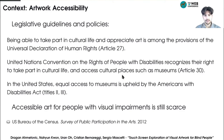The ability to participate in the cultural life and appreciate art is included among the provisions of the Universal Declaration of Human Rights. For people with disabilities, this provision is implemented by the United Nations Convention on the Rights of People with Disabilities, and in the United States by the Americans with Disabilities Act. The legislative framework upholds equal access to art venues and the ability for everyone to appreciate works of art.